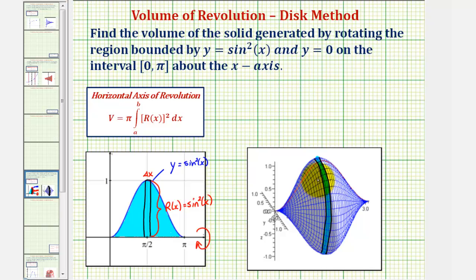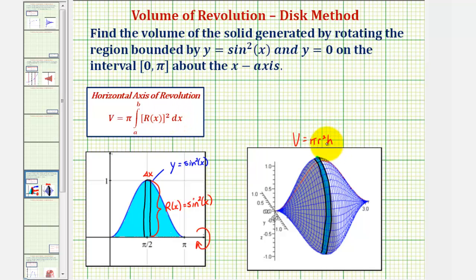This disk is actually a right circular cylinder, which would have the volume of V equals pi r squared h, which we can see in our integral formula. Here's the pi, r squared is R(x) squared, and dx or delta x would be the height or h of the right circular cylinder. So we have all the information we need in order to set up our integral.